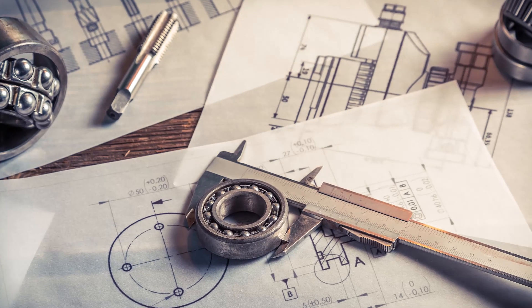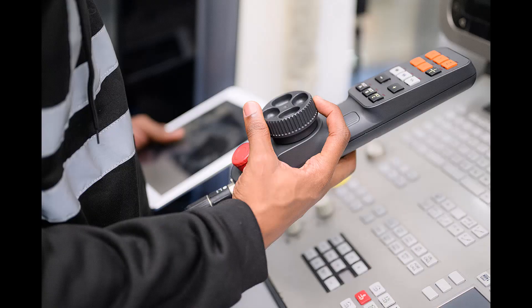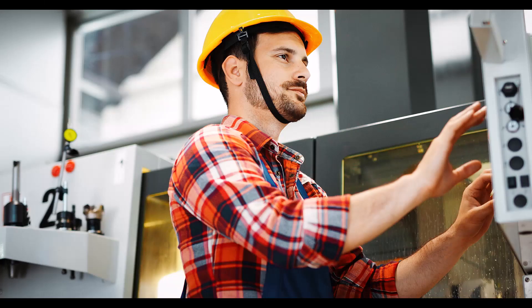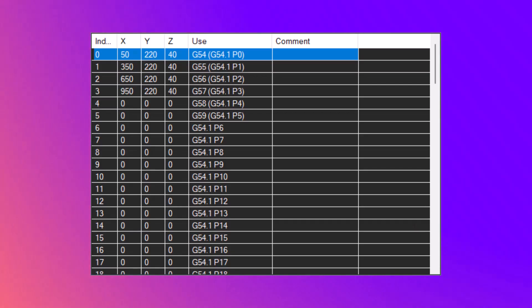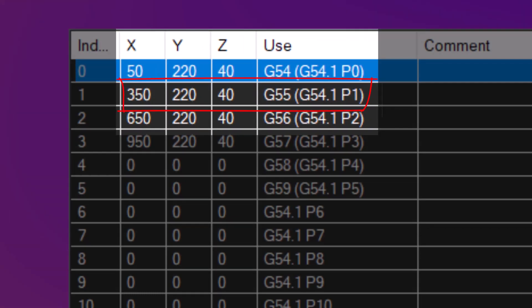To use a work offset, it must first be defined. This is typically done by jogging the machine to the desired zero position, then saving that position as a work offset. After that, you simply call the corresponding G-code whenever you want to use that offset. For instance, if you want to switch to the work offset defined for the second vice, you'd include G-55 in your program.